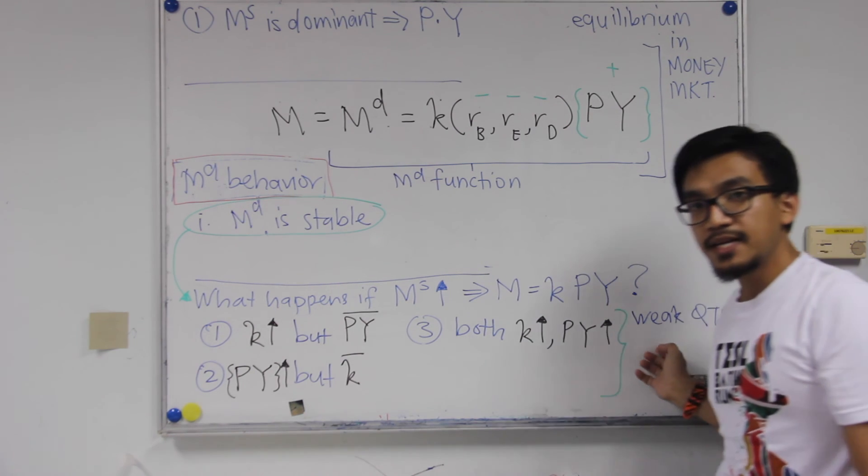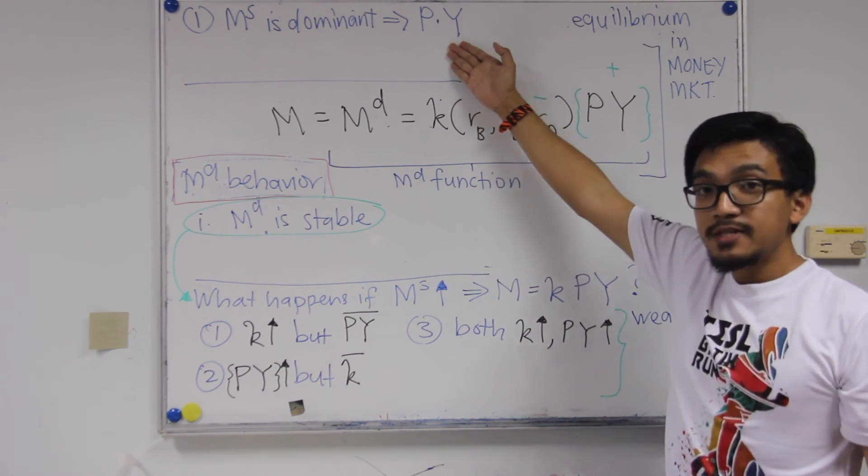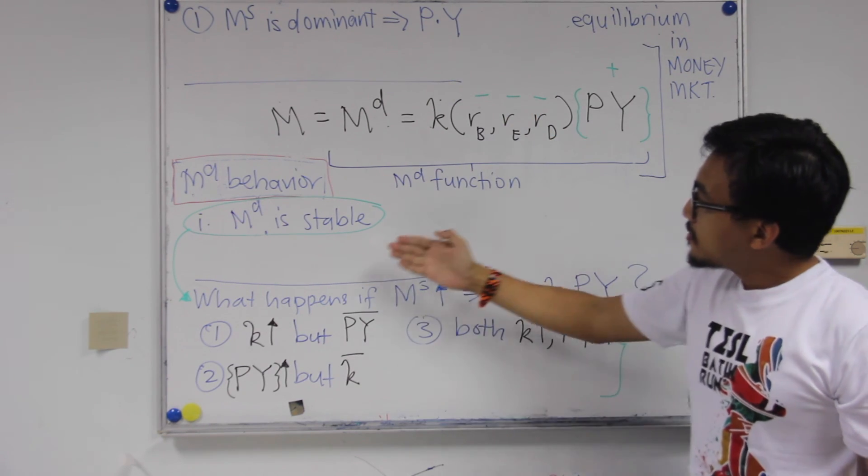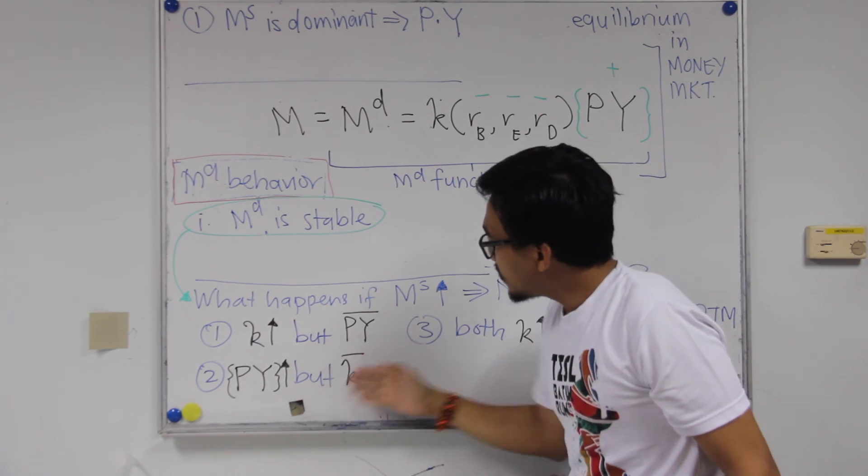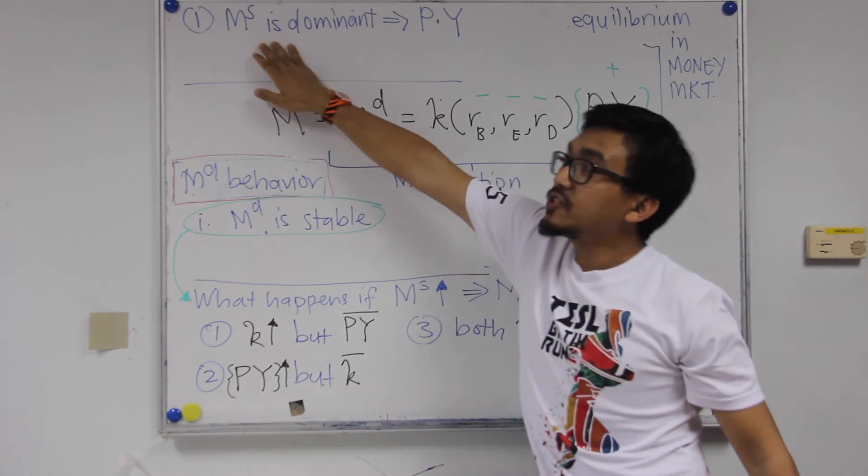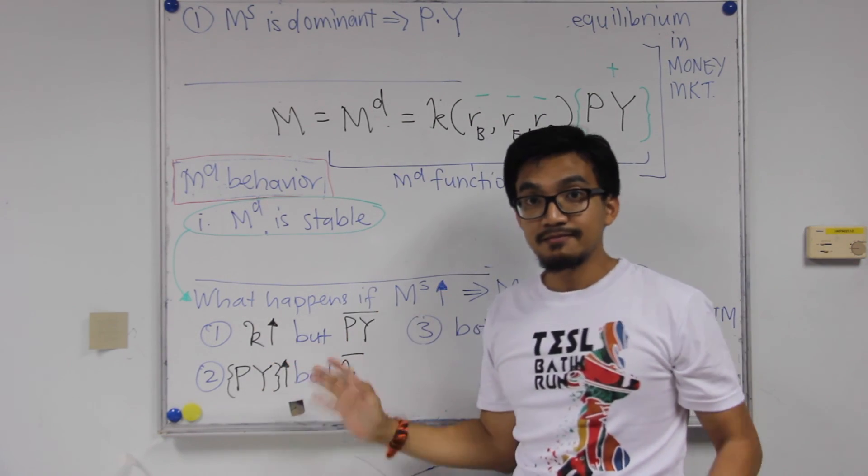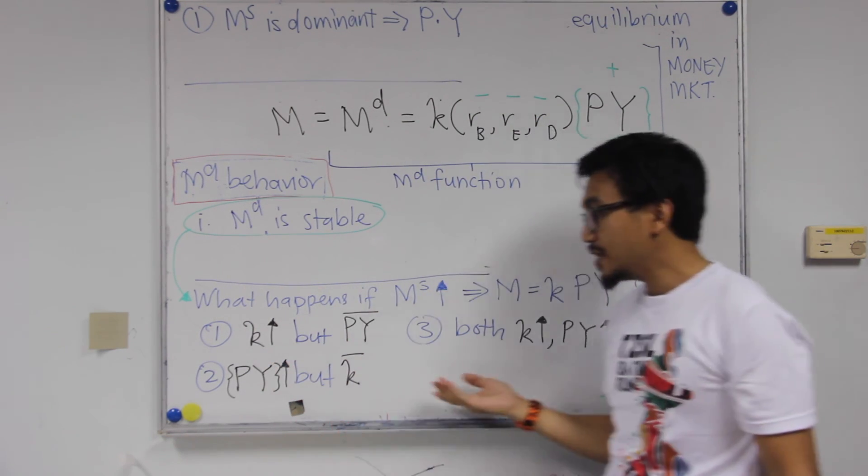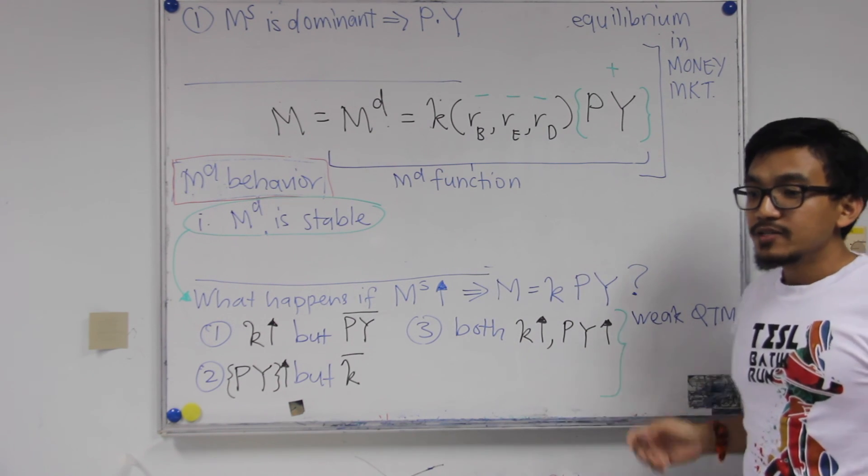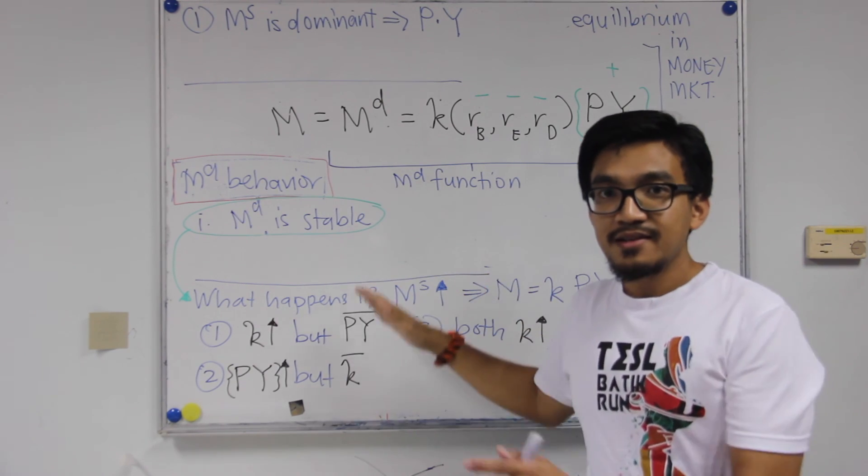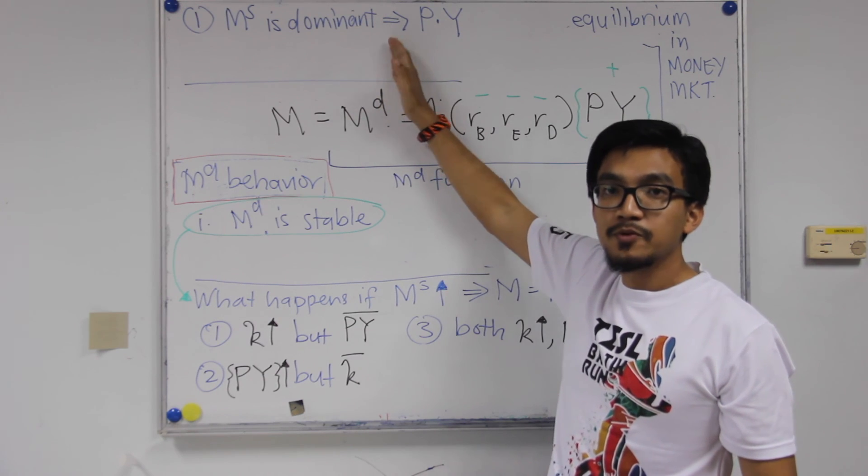So this is why with only this assumption, because it may lead to a situation where actually nominal income doesn't change. So this is why we attribute these cases, this assumption, with weak quantity theory of money. Because to support this proposition number one, because it seems that by only imposing this assumption, only in two cases that we could see that a change in money supply will have a dominant impact on nominal income. But in the first case, it may not. So that's why we call this assumption as the weak quantity theory of money. So we need to add another assumption to enable us to really support this proposition.